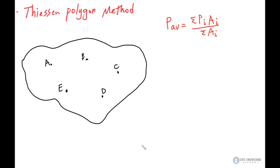Alright, so what I'm going to do for this video is show you how to use the Thiessen polygon method for the purpose of calculating average rainfall precipitation.